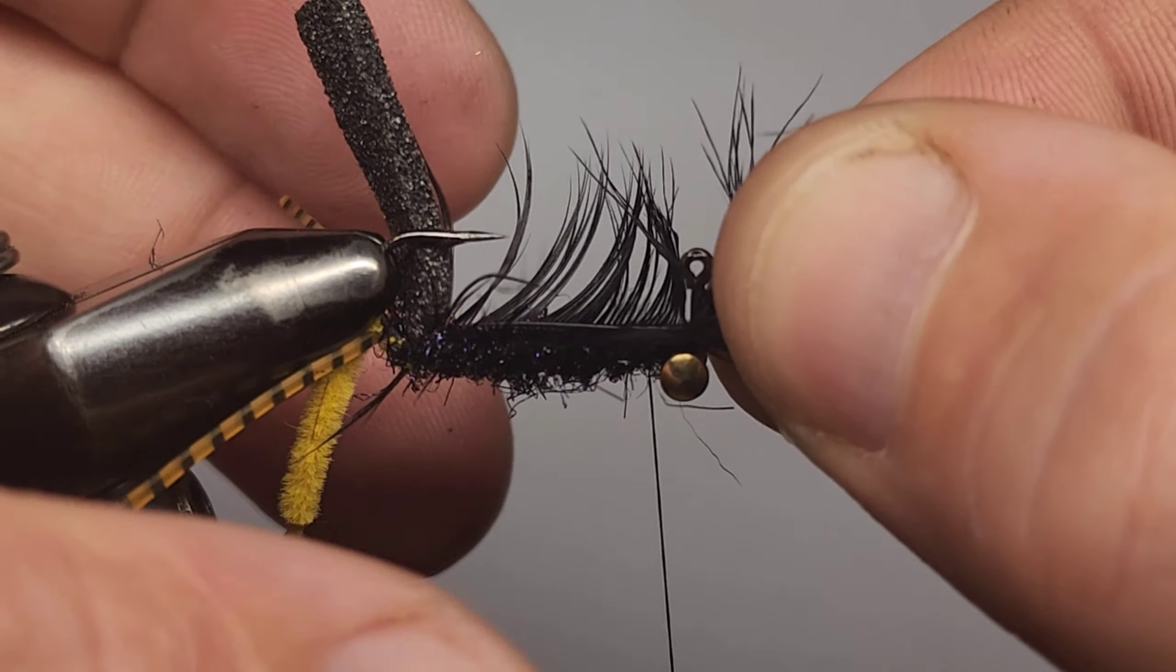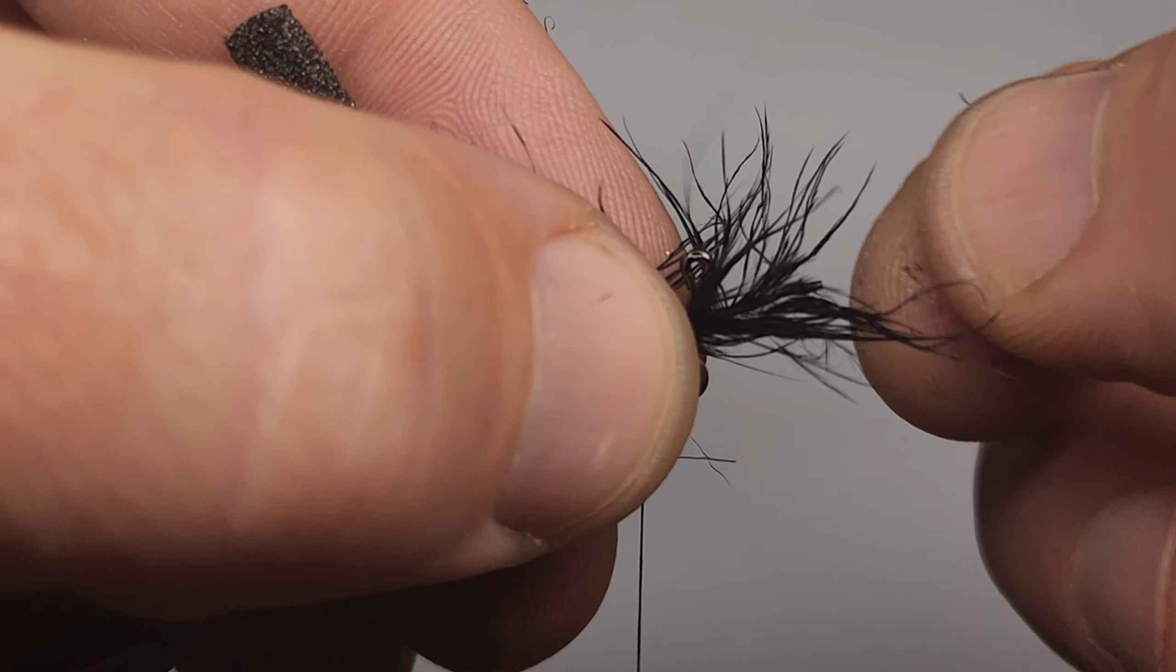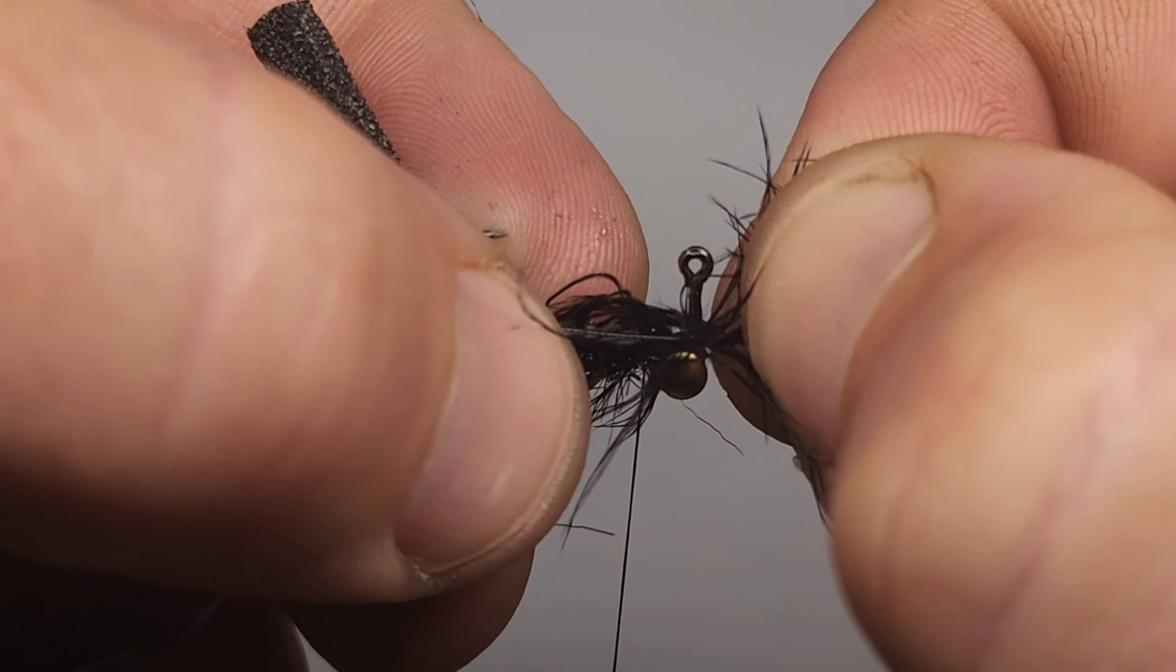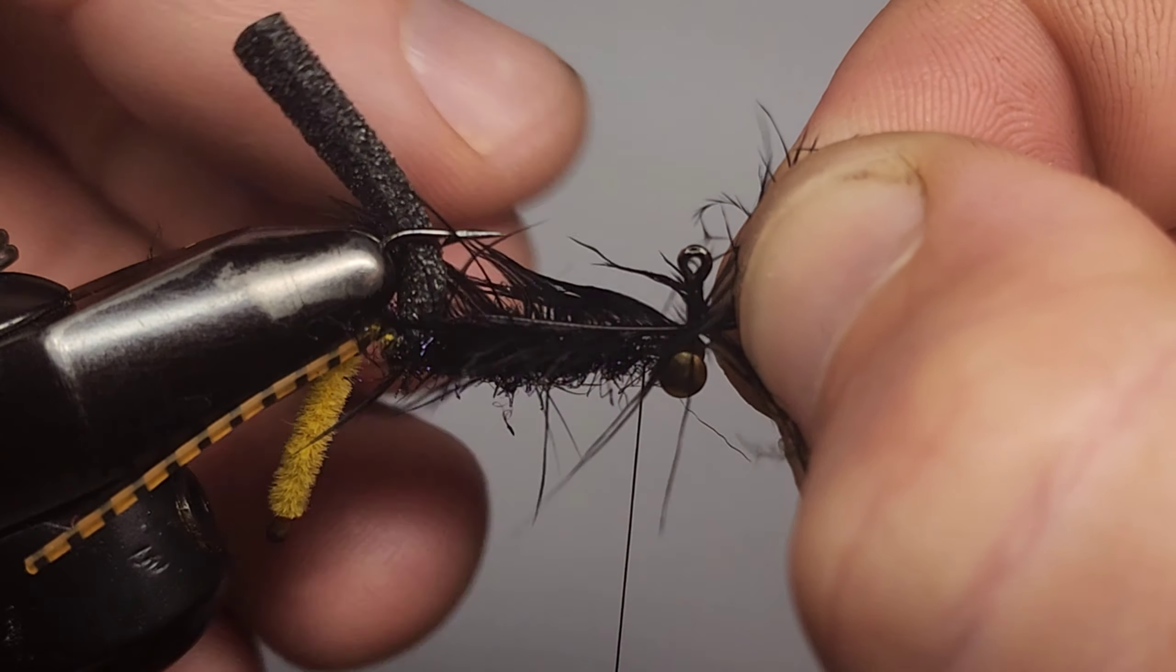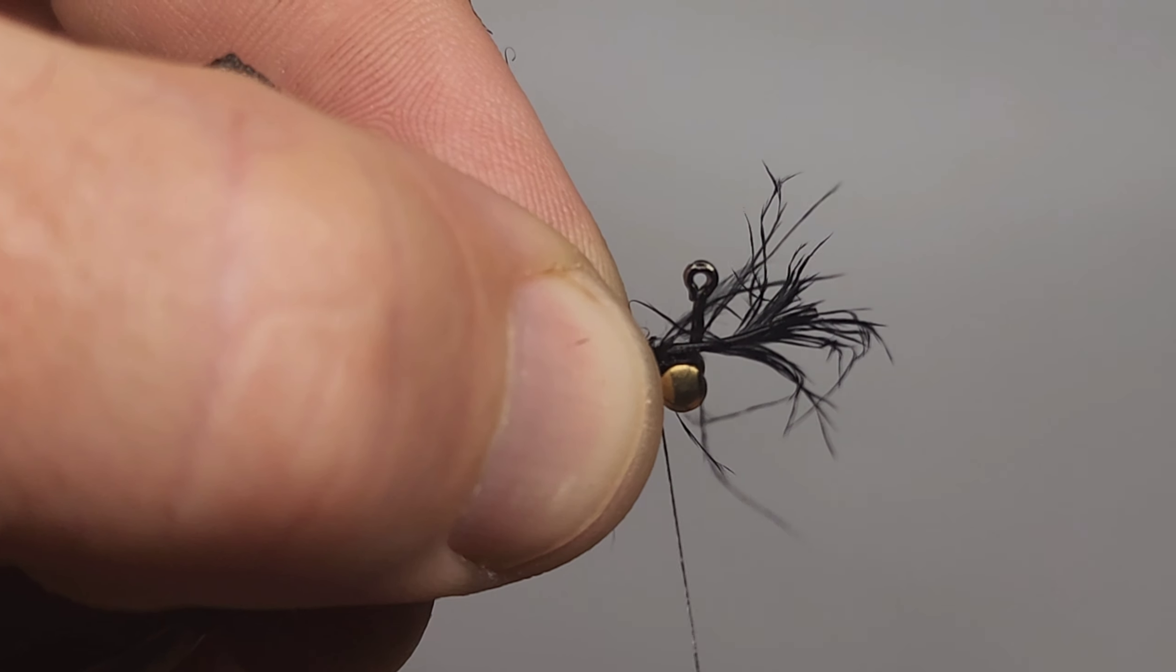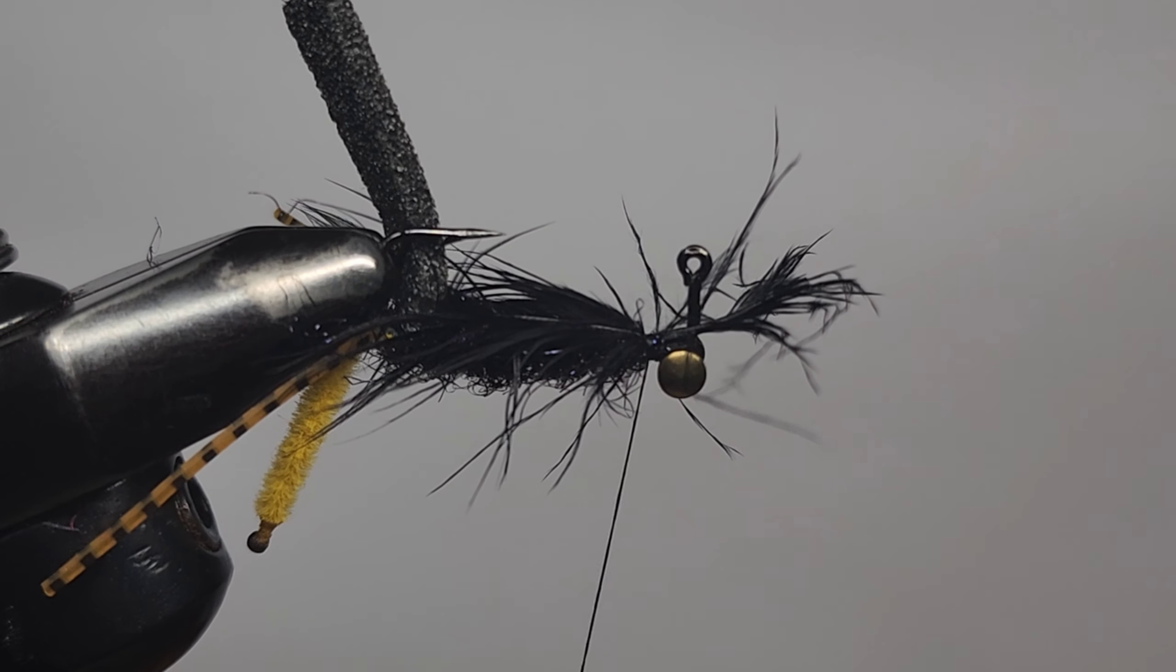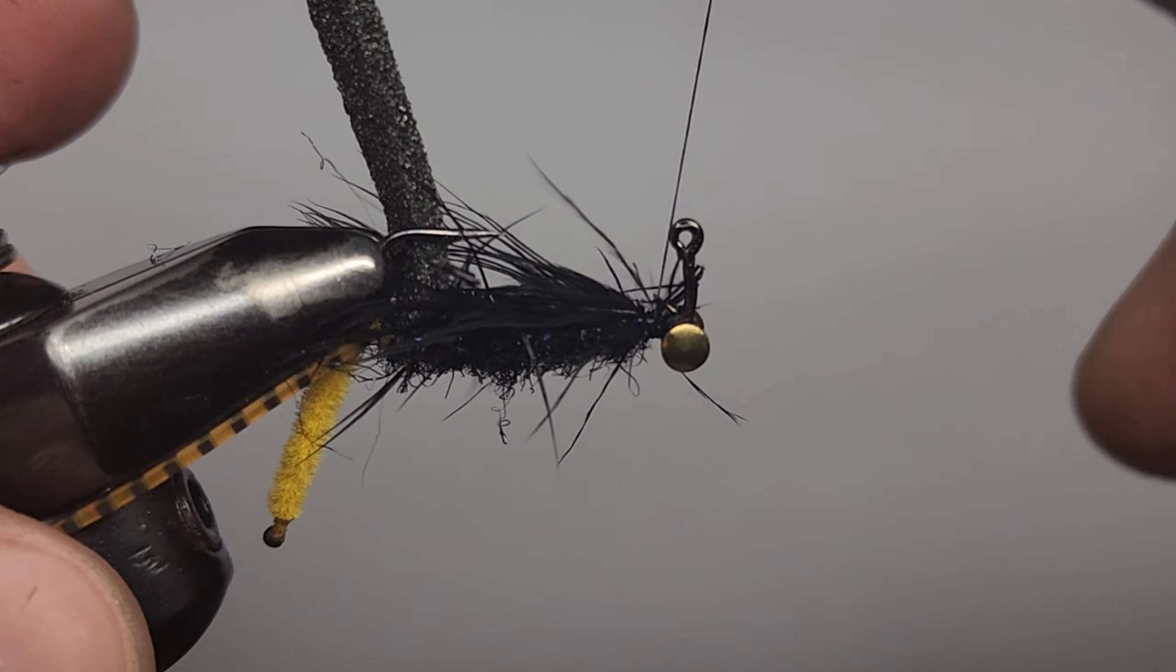Okay. Now we're happy with that. We're going to bring our partridge flank forward. And pull back as many of the fibers as we can to create legs on either side of this fly. I'll put a wrap over that. Give it a bit of a... yep, there we go. Happy with that. Alright, snip away the excess.